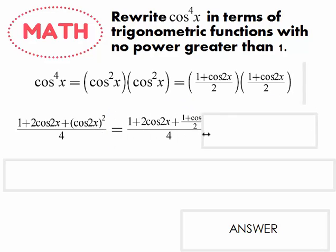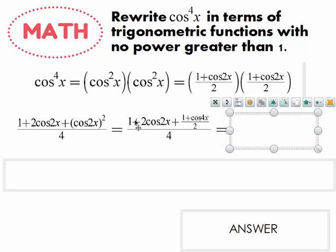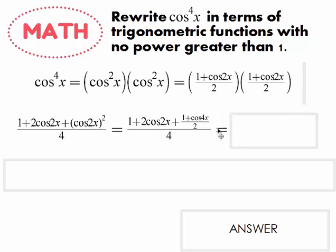Everything stays the same, but cosine squared 2x becomes one plus cosine 4x, all over two. The reason it's 4x and not 2x is that the formula already has a two in it. Since we're plugging in 2x, two times two gives us four. So if we had plugged in 8x, the formula would give us 16x.